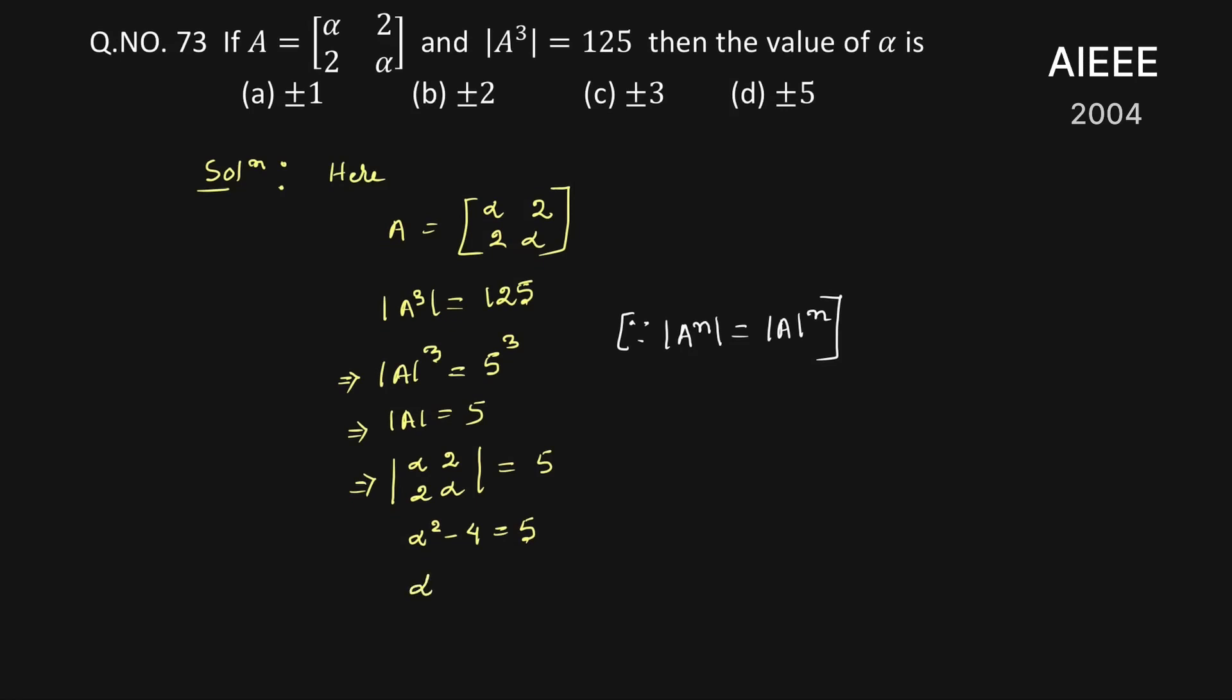So alpha square equal to 9. This implies that alpha equal to plus minus 3.